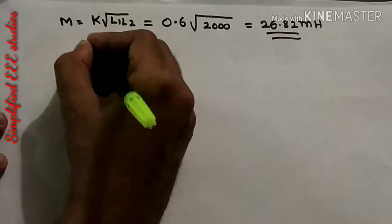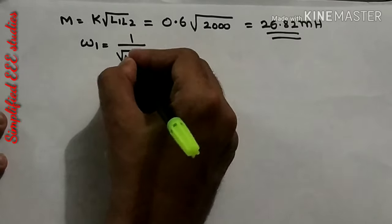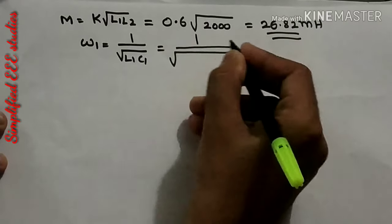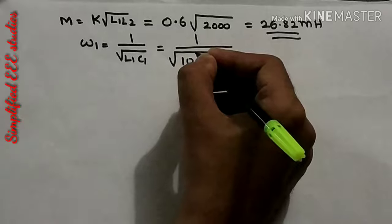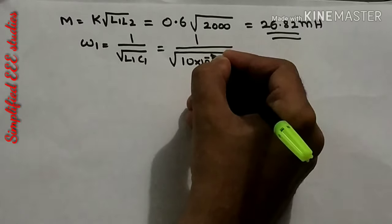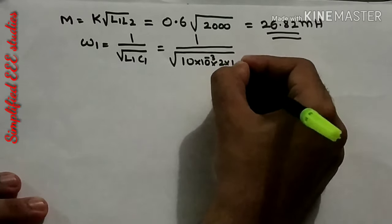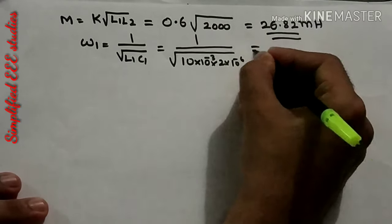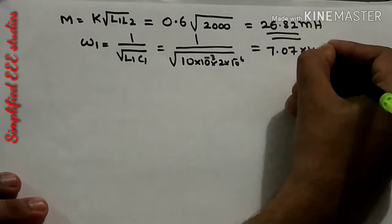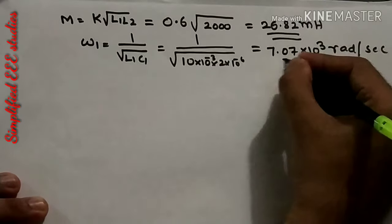Next, calculate Omega 1 using the formula ω1 = 1 / √(L1 × C1). Substituting L1 = 10 × 10⁻³ henry and C1 = 2 × 10⁻⁶ farad, you will get ω1 ≈ 7.07 × 10³ radians per second. Please verify with a calculator.